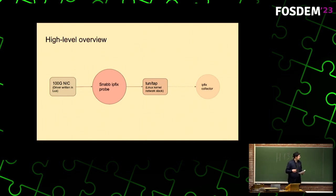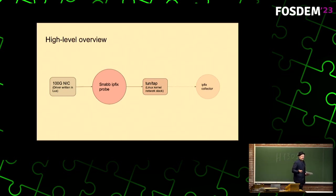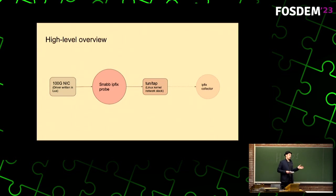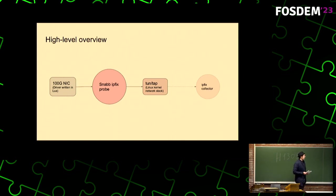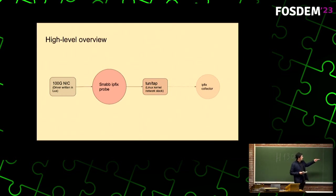On the right side you have a device driver written in Lua that is part of SNAP and actually handles the bulk of the traffic. On the left side you have an interface to the Linux network stack. Since the flow export data is rather small in comparison, you can just do that over the regular Linux network stack, and that works. On the very left side you have the IPFIX collector — a separate application that we send the flow data to in the end.